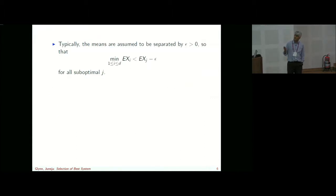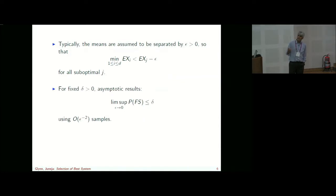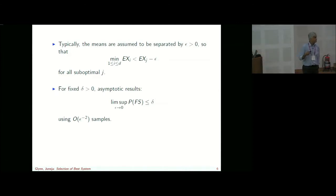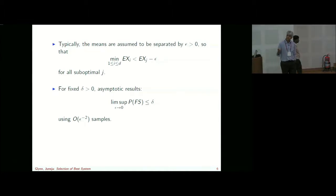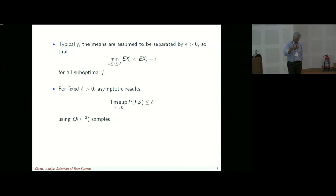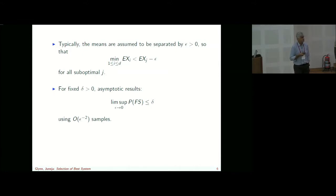Problems are assumed to be well-separated so the best design is separated from others by at least epsilon. Delta is fixed — you want to control the probability of false selection — and in typical literature delta is kept at five or one percent, and you analyze the probability of false selection as epsilon goes to zero. The flavor of analysis is order epsilon-squared-inverse number of samples, because the central limit theorem gives precision of order 1/√n, so to achieve epsilon you need order epsilon-squared-inverse samples.